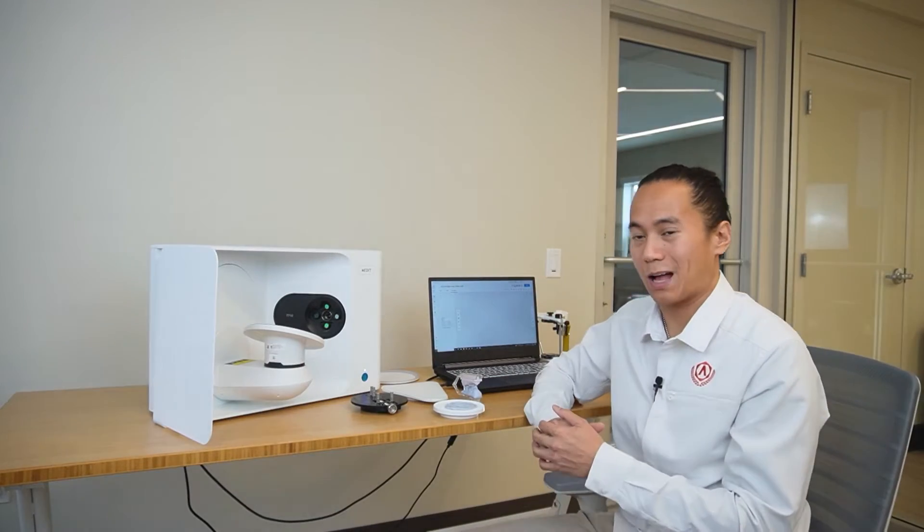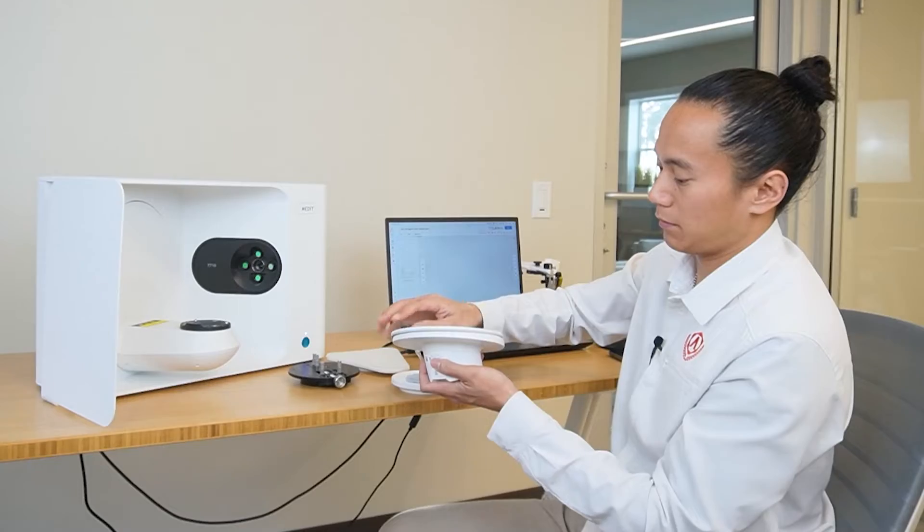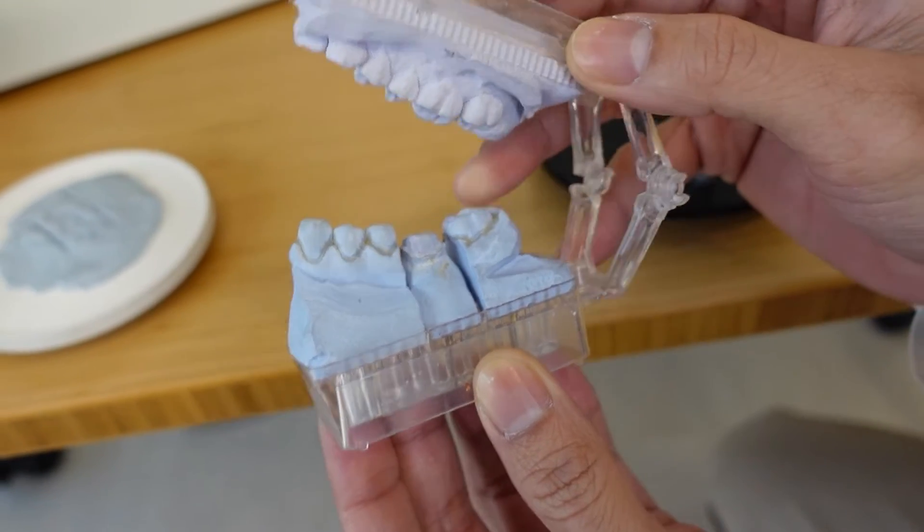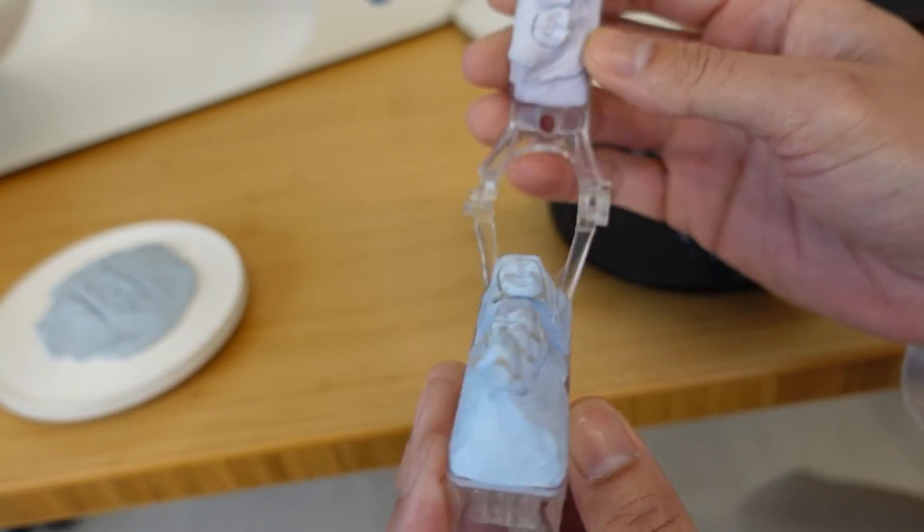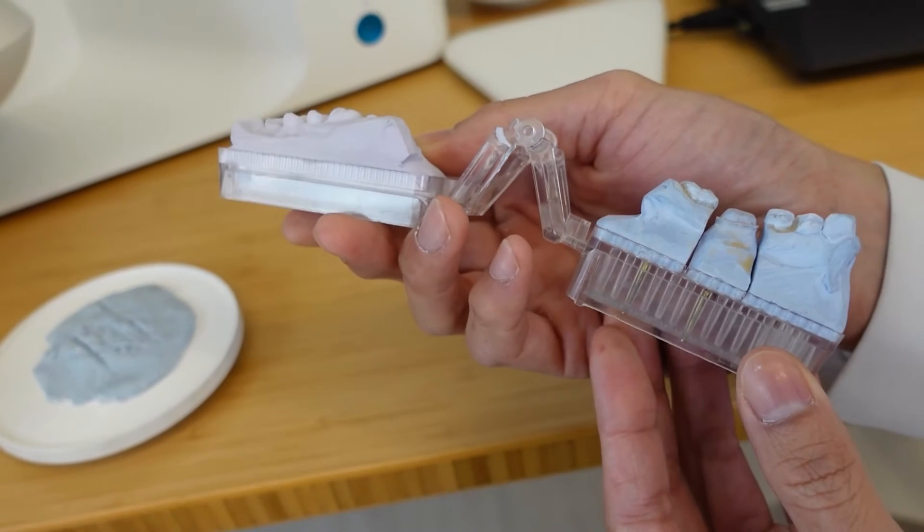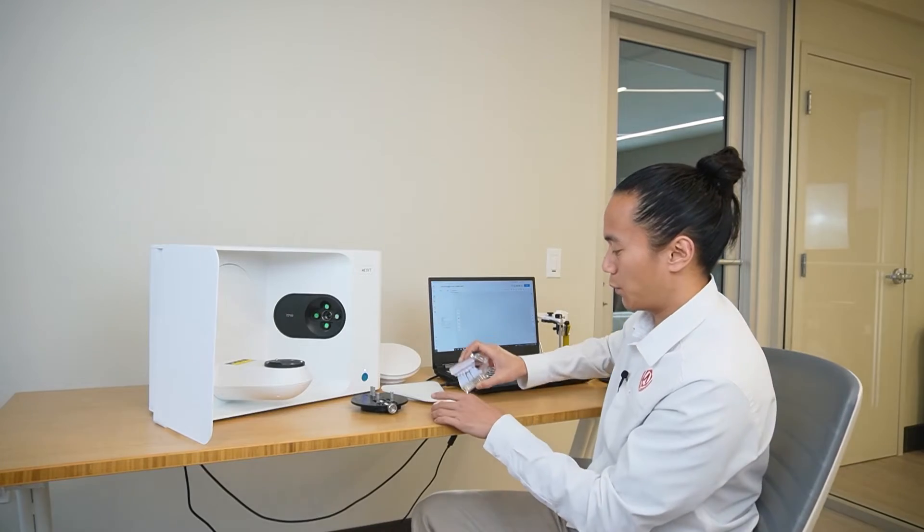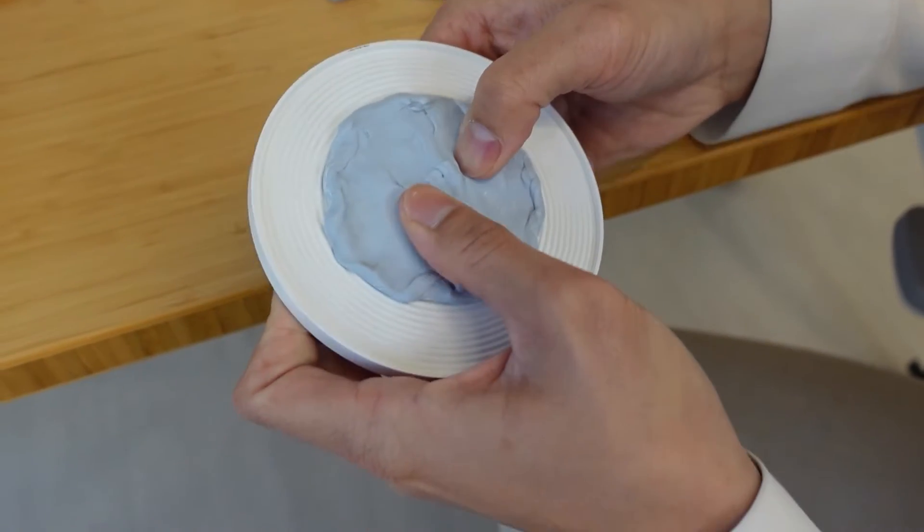Now that we've finished the calibration process, let's go ahead and put away our calibration plate. We'll put this off to the side. And the first case that we're going to be demonstrating today is going to be a single unit crown. I have a Quadrant model here that's already been prepped for dies.